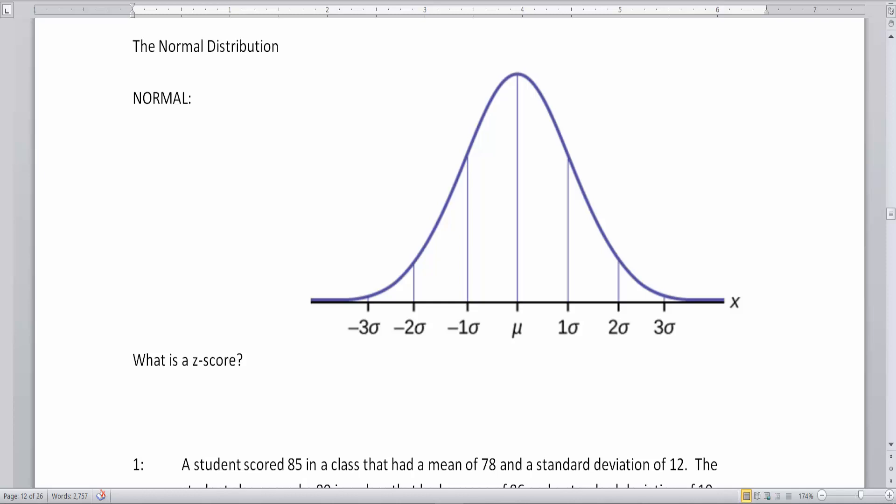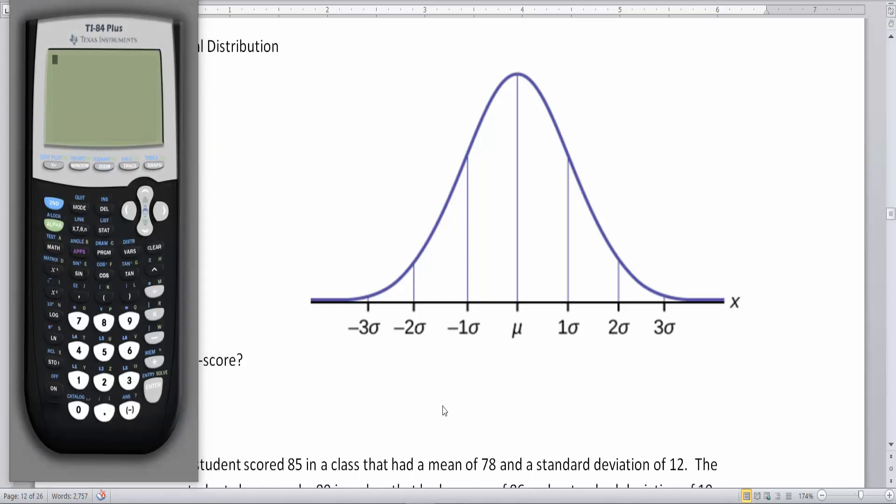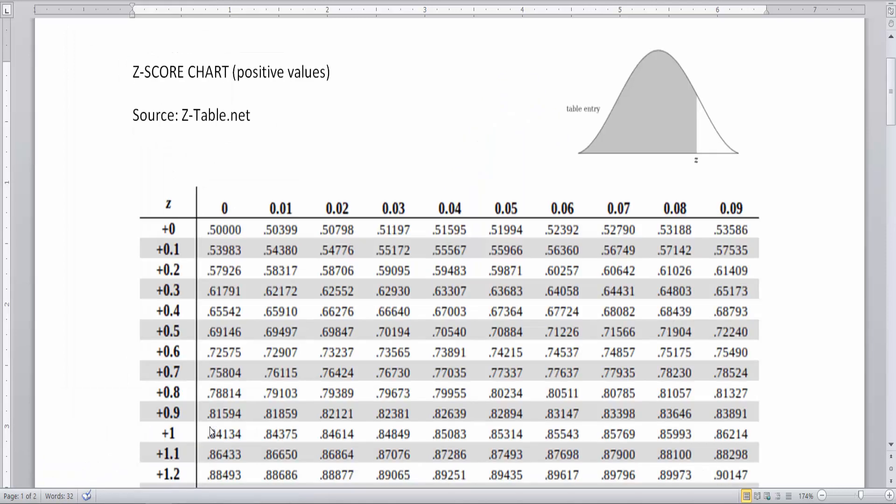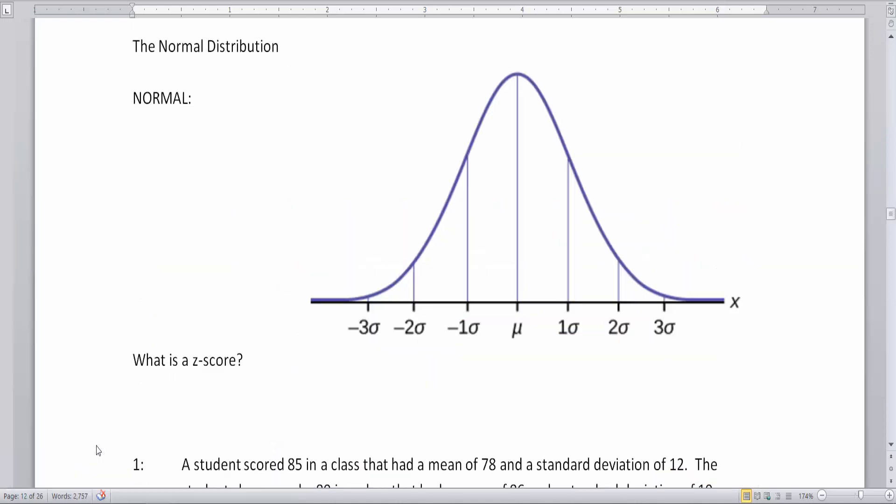Now before you start this lesson here, I strongly recommend that you get two things in front of you. First of all, you're going to need a calculator, and second of all, you're going to definitely need the z-score chart. Now I have a downloadable printable copy of this, and we're going to talk a little bit more about how to read and use the chart, and we'll get into this in detail later. But let's get started with the empirical rule.